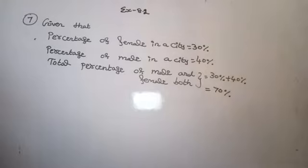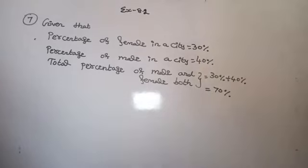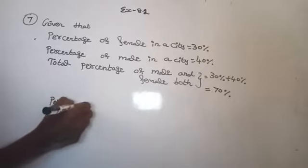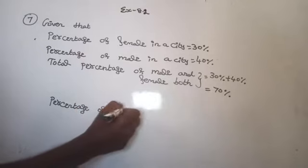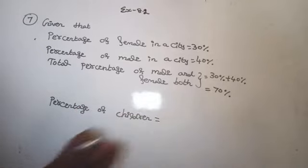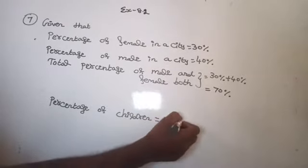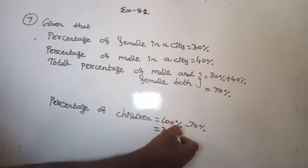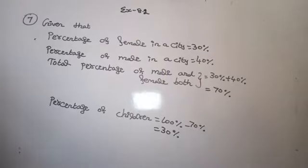Now, what is the question? What percentage are children? The percentage of children equals: total 100% minus 70% of males and females, which gives 30%. So 30% of the city population are children.